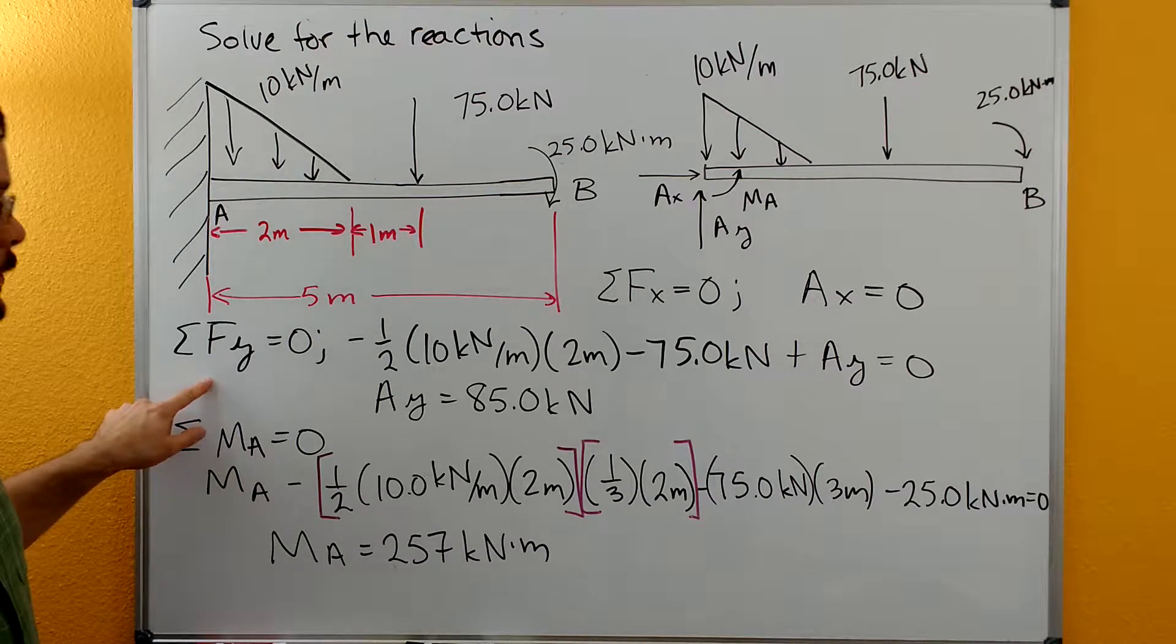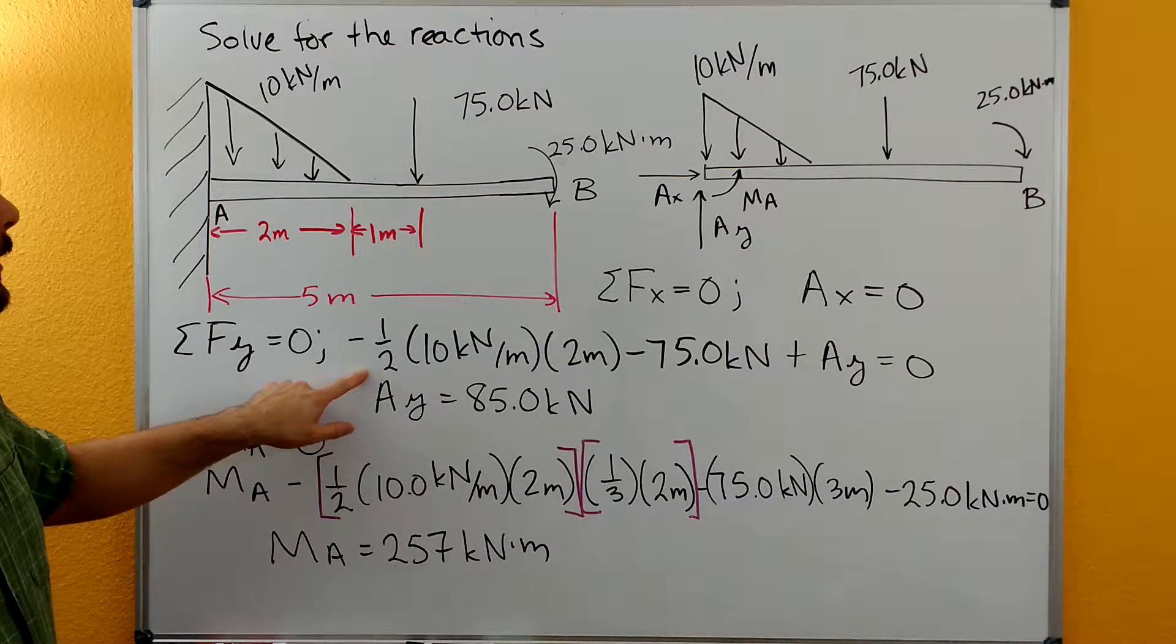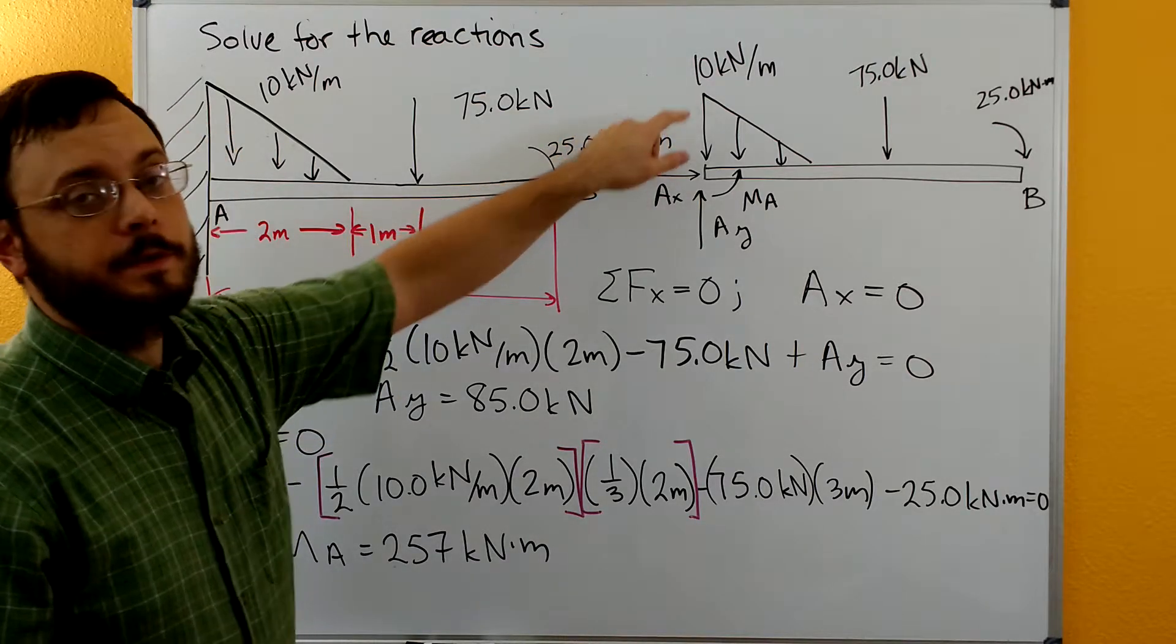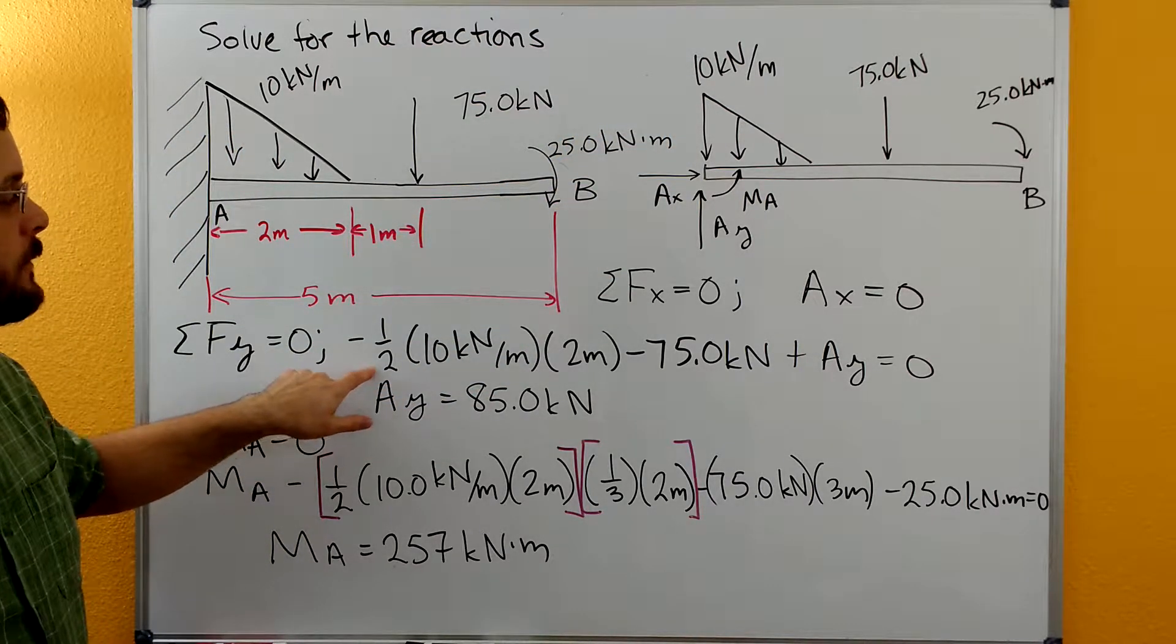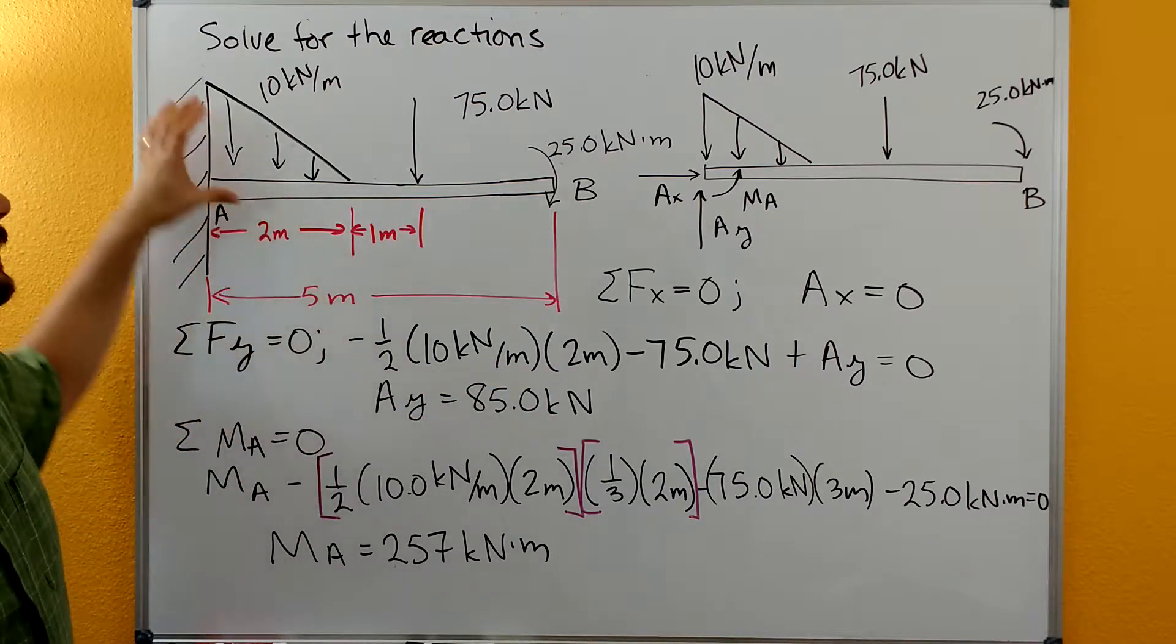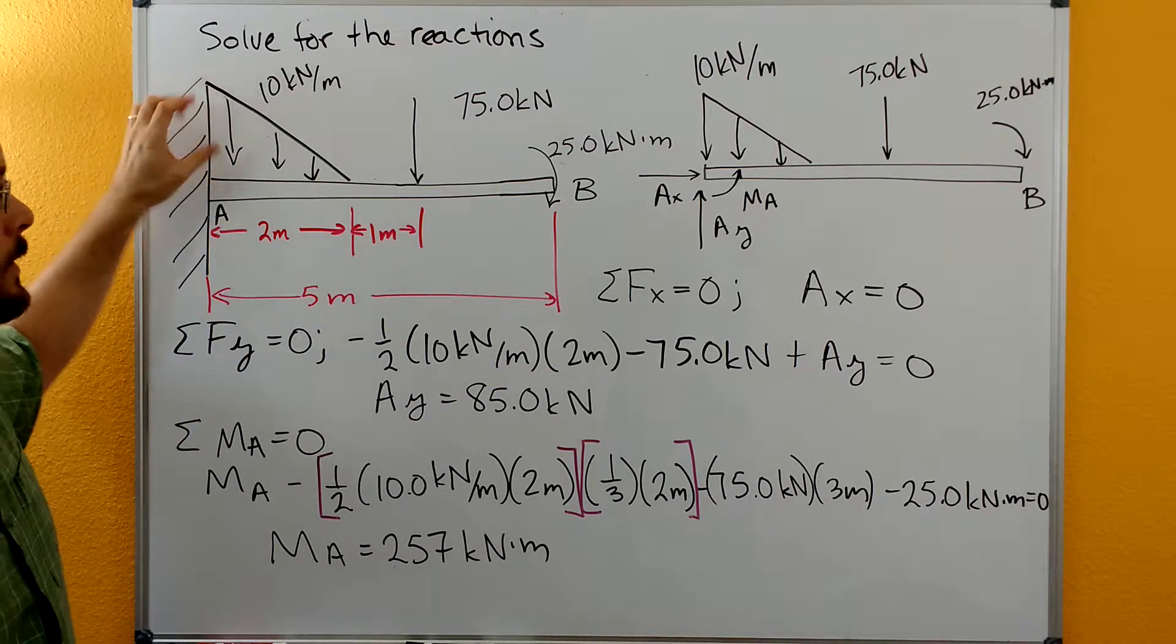We can do our sum of forces in the Y. We have our force from our distributed load here, so it's a triangle, so it's going to be one-half of the base times the height, so the two meters here times the height of 10 kilonewtons per meter.